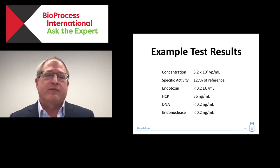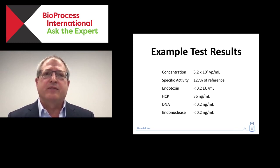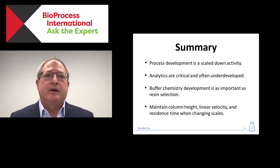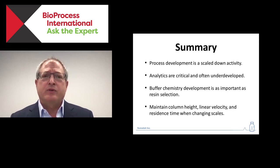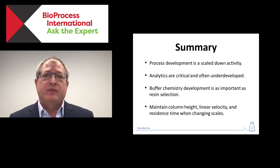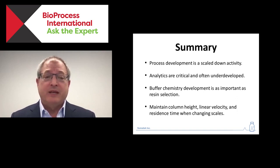Our specific activity is 127% of reference — that's good. Endotoxin is low. Host cell protein is low. DNA is low. We had a number of other process-specific assays running, and everything was in spec. To summarize: process development is a scaled-down activity if it's going to go smoothly. Analytics are critical. And once you've got a stationary phase, all the heavy lifting is done with buffer design. Critical parameters for smooth scaling are maintaining column height, linear velocity, and residence time.